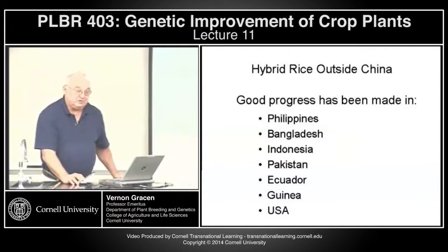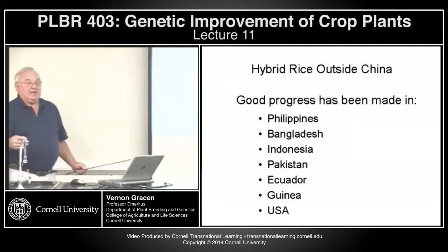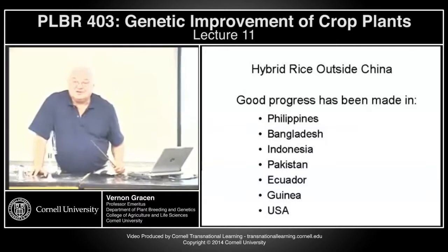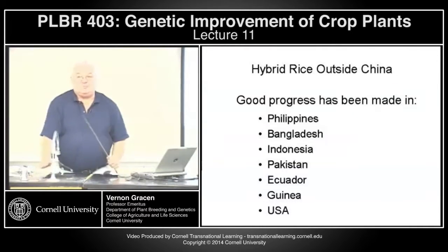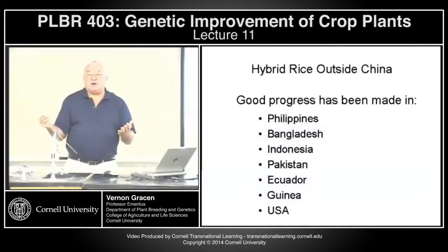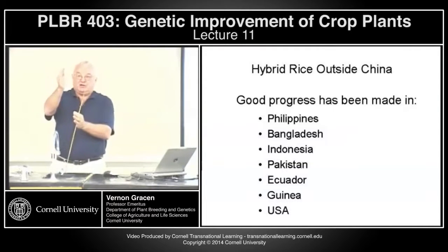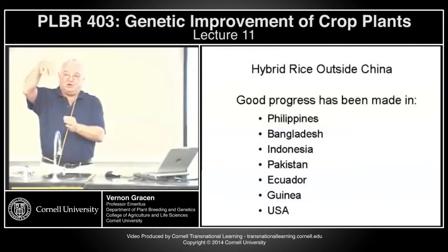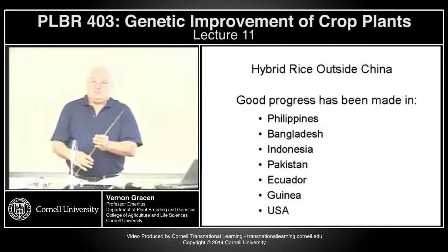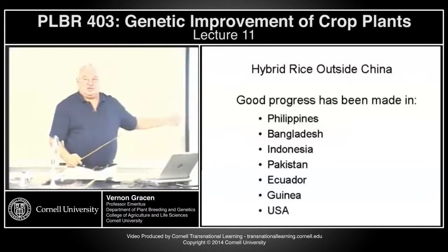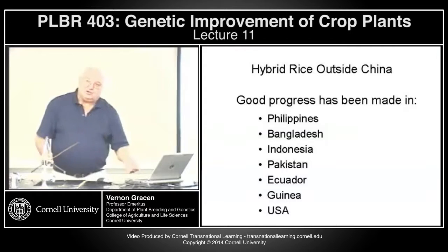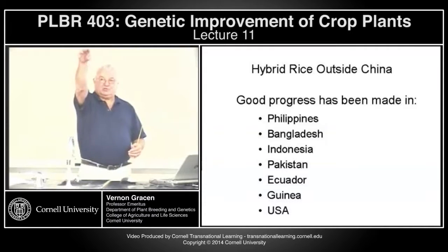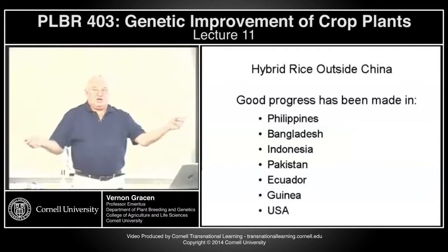Why is spreading pollen a problem in rice? The rice plant is normally self-pollinated, so the anthers don't come out of the flower very far. In hybrid production they use male sterile female plants that have no pollen, so to get pollen to those plants you have to select for male plants that exert their anthers, and then help that pollen move.